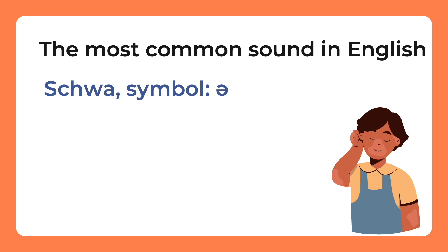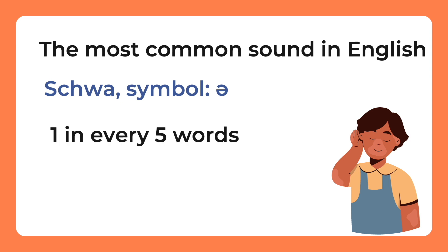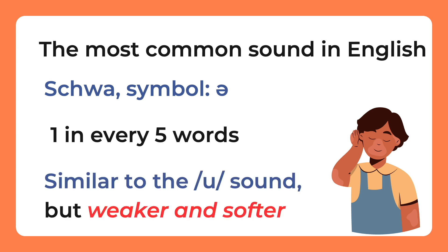It is estimated that about one in every five words have the schwa sound. It's a very neutral sound — it can really mimic any other vowel sound. If we were to describe it, we could say it's very similar to the 'ah' sound for the letter U as in umbrella, but softer and weaker, as this sound appears on unstressed syllables.